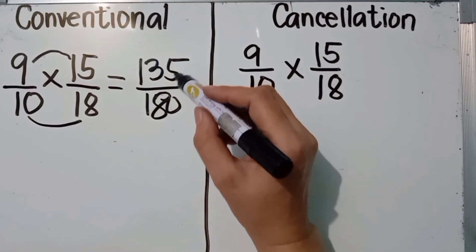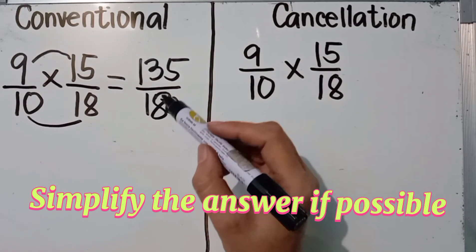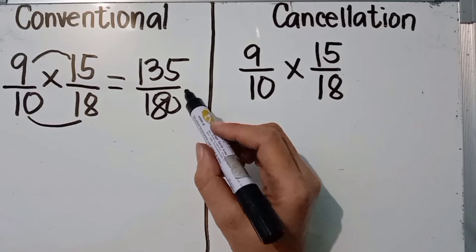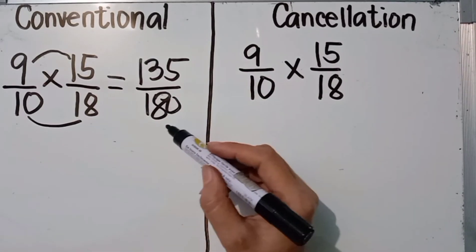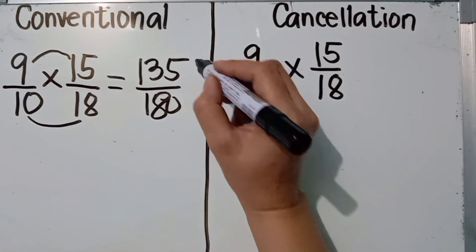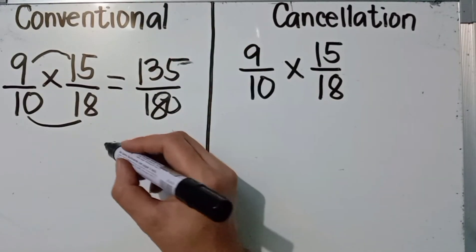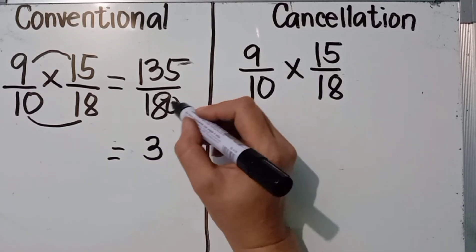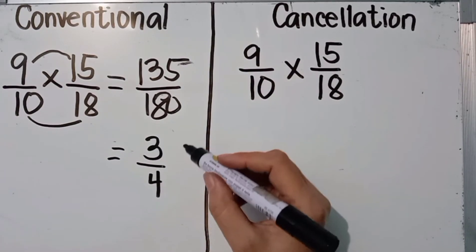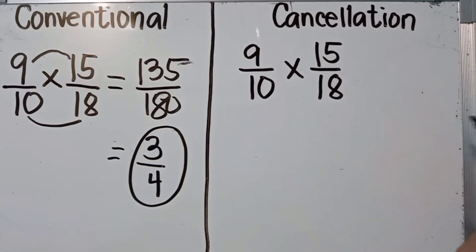Take a look at our answer: 135 over 180. The last step is to simplify the answer if possible. Yes, 135 and 180 have a common factor of 45. So divide both by 45: 135 divided by 45 equals 3, and 180 divided by 45 equals 4. Our final answer is three fourths using the conventional method.